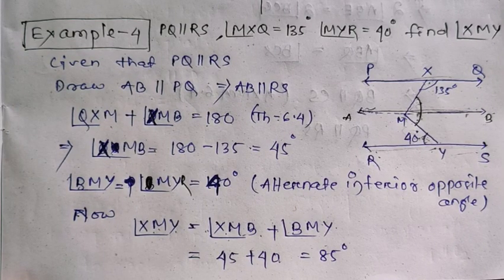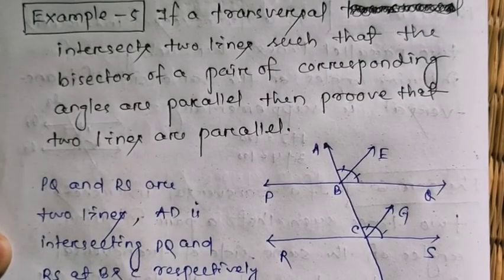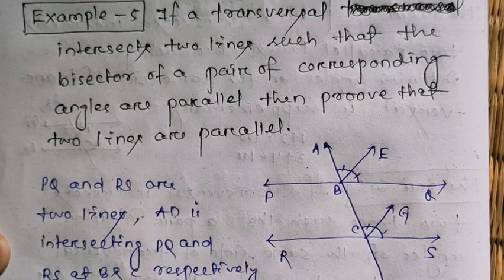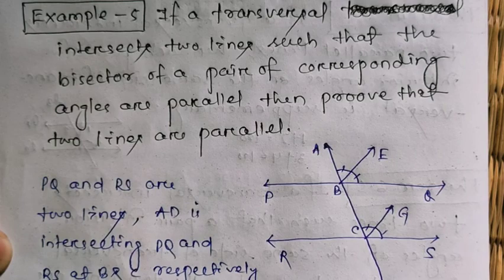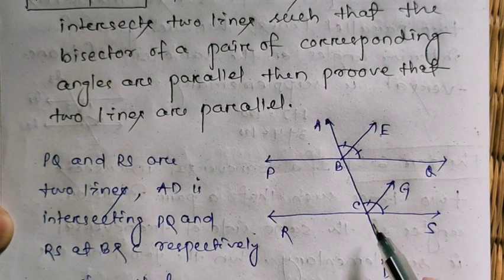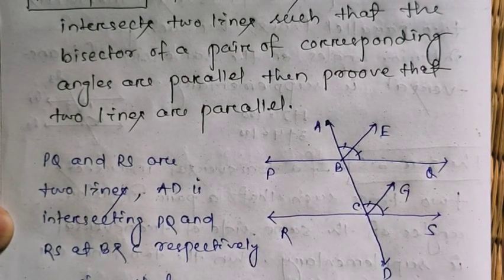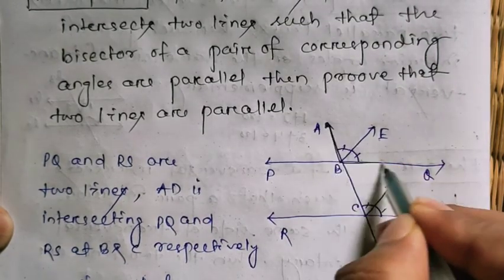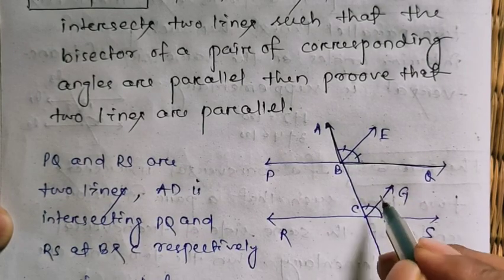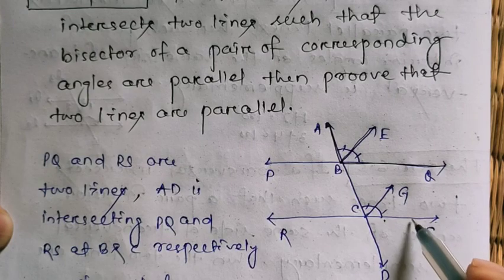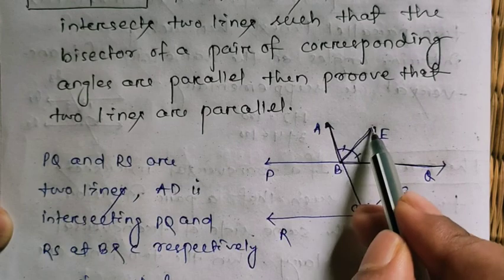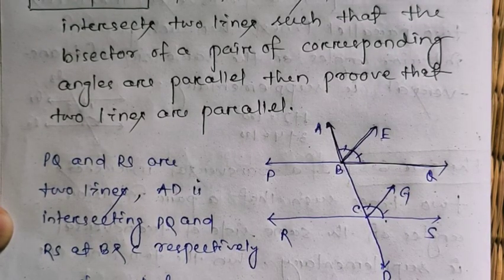Example 5: If a transversal intersects two lines such that the bisectors of a pair of corresponding angles are parallel, then prove that the two lines are parallel. Here, AD intersects PQ at B and RS at C. Angles ABQ and BCS are corresponding angles, and BE and CG are bisectors of angles ABQ and BCS respectively. Given that BE is parallel to CG, prove PQ is parallel to RS.